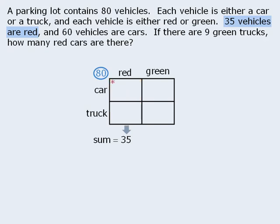Now if there are 80 vehicles altogether, and 35 of them are red, then we can conclude that the remaining 45 vehicles must be green. Now some of these green vehicles will be green cars, and some will be green trucks. So we cannot place any number into either of these two boxes. However, we do know that the sum of these two boxes must be 45.